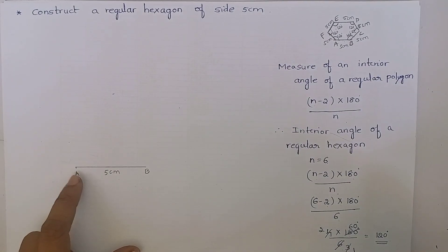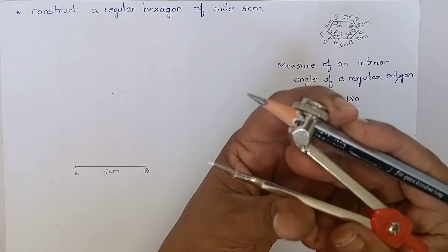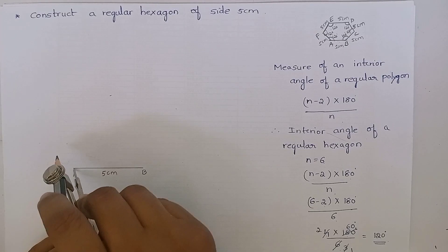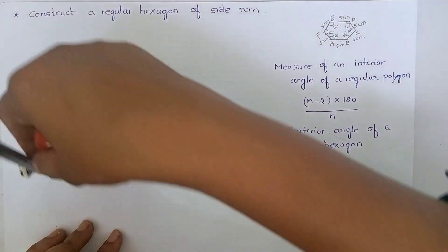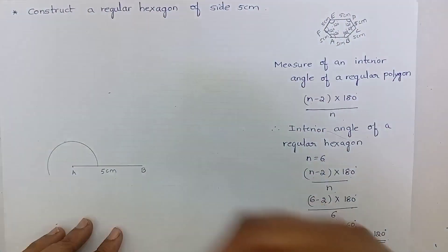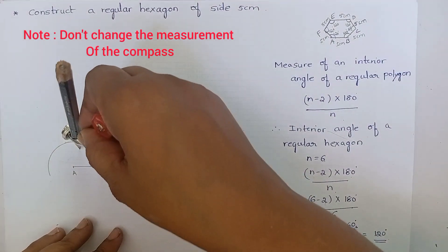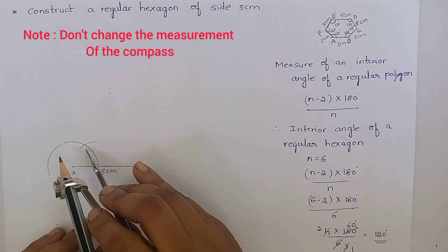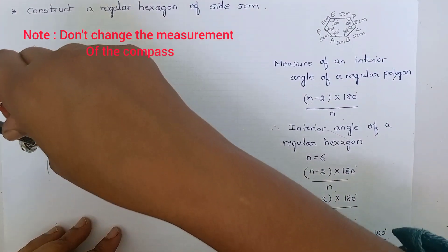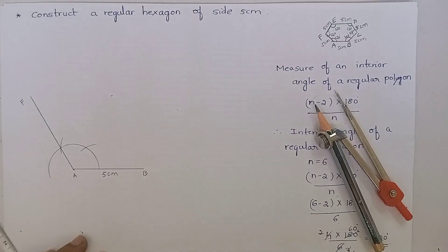Construct 120 degrees at point A and at point B. To do this, adjust your compass to any measurement of your choice. Keep the compass at point A and draw an arc. Keep the compass at this point and cut an arc — we know that it measures 60 degrees. Keep the compass at this point A and cut another arc. Join this and produce a line. It measures 120 degrees.